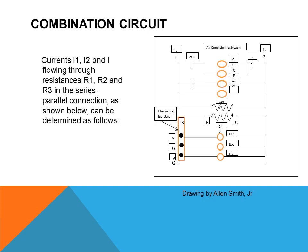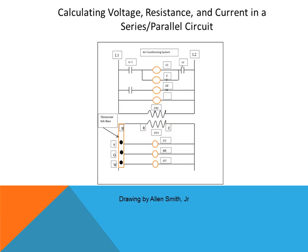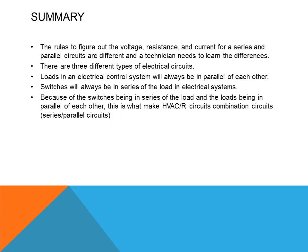Going through combination circuits current: current 1 and current 2 equal the current flow through the resistance. R1, R2, and R3 in the series-parallel connection can be determined as follows. Looking at the diagram, we can see how it is worked out by examining the power source, going through the resistance — the two in parallel with each other, and the one resistance in series. This is essentially the same diagram as the light bulbs, but we look at the resistance of the light bulbs and the resistance of the rheostat. To summarize, the rules to figure out voltage, resistance, and current for series and parallel circuits are different, and a technician needs to understand and learn the difference.